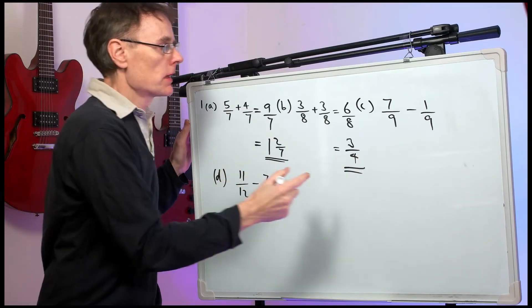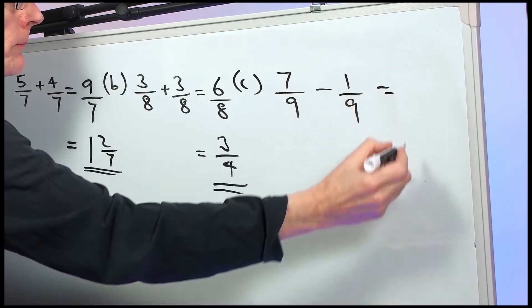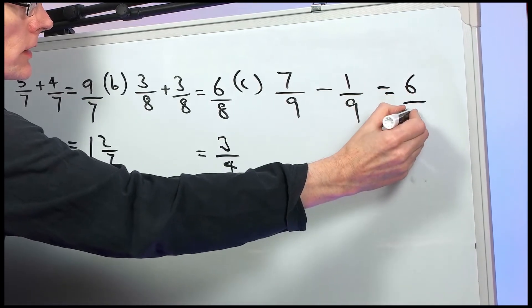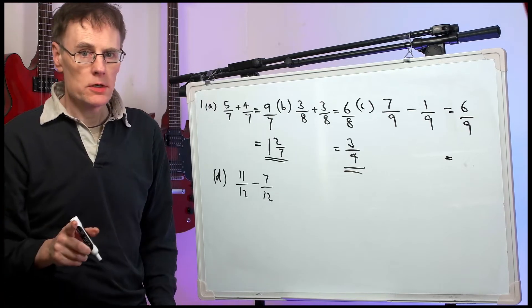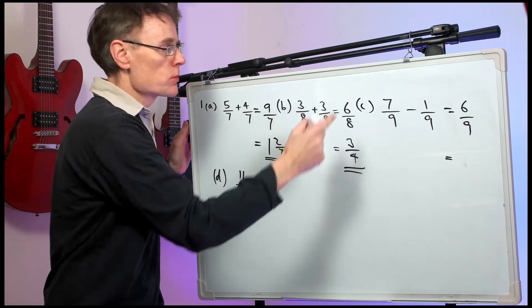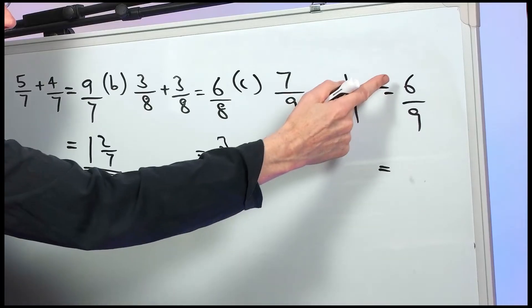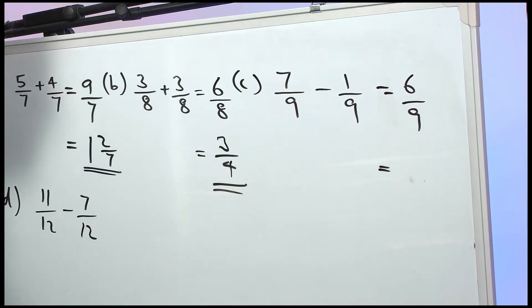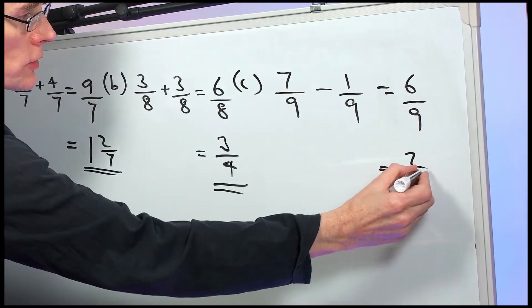Part C, 7 ninths minus 1 ninth gives us 6 ninths. Again, we can reduce that to lowest terms. That gives us 1 mark out of 2. We can divide the top and bottom by 3. It gives us 2 thirds.